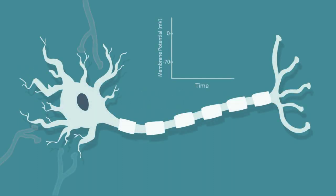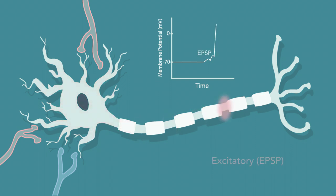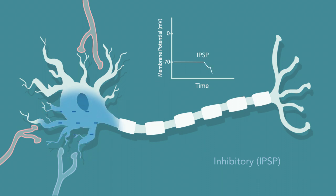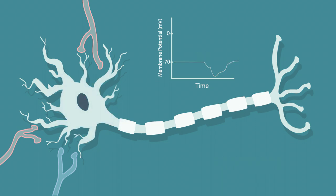Postsynaptic potentials do more than merely excite or inhibit a neuron. An excitatory postsynaptic potential, or EPSP, increases the likelihood that a neuron will fire, since it is depolarizing — in other words, it lets positive ions flow into the cell. Alternatively, an inhibitory postsynaptic potential, or IPSP, decreases the likelihood that a neuron will fire, hyperpolarizing the cell by making the membrane potential more negative. Despite whether they lead to an action potential or not, both EPSPs and IPSPs generate a separation of charge, known as a dipole.